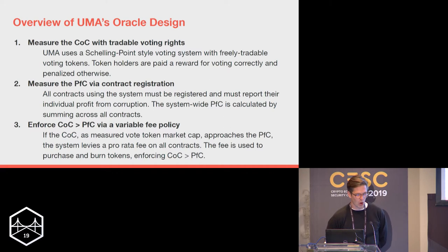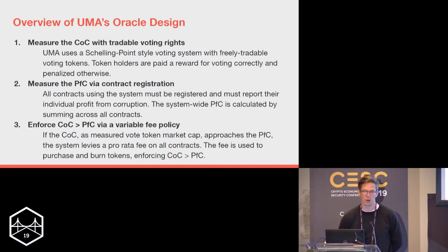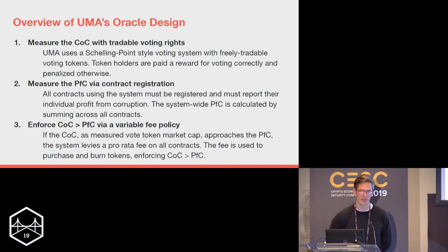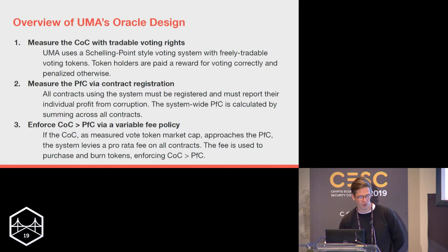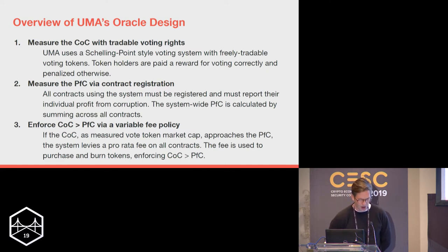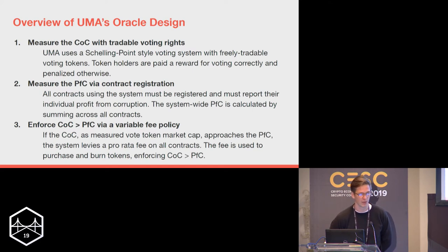Step one: we measure the Cost of Corruption with tradable voting rights. UMA uses a Schelling-point style voting system with freely tradable voting tokens. Token holders are paid a reward for voting with the majority correctly and penalized otherwise. What this allows us to do is use the market to reveal the cost of corrupting the system.